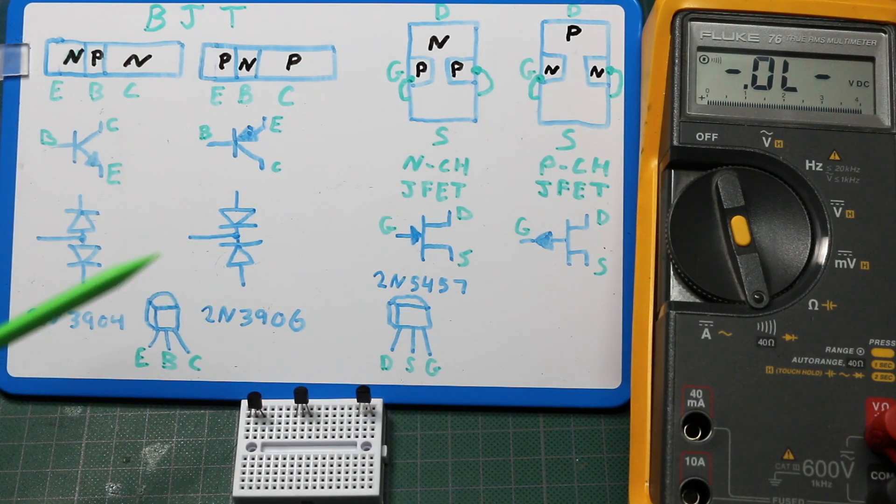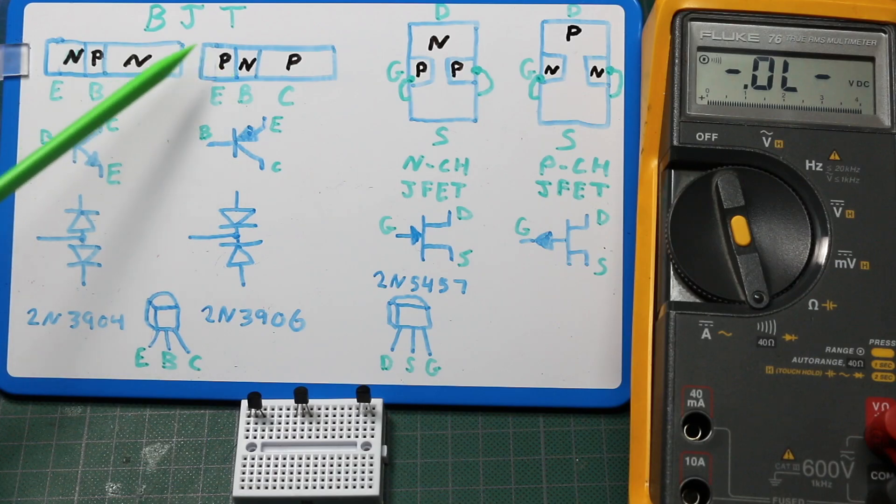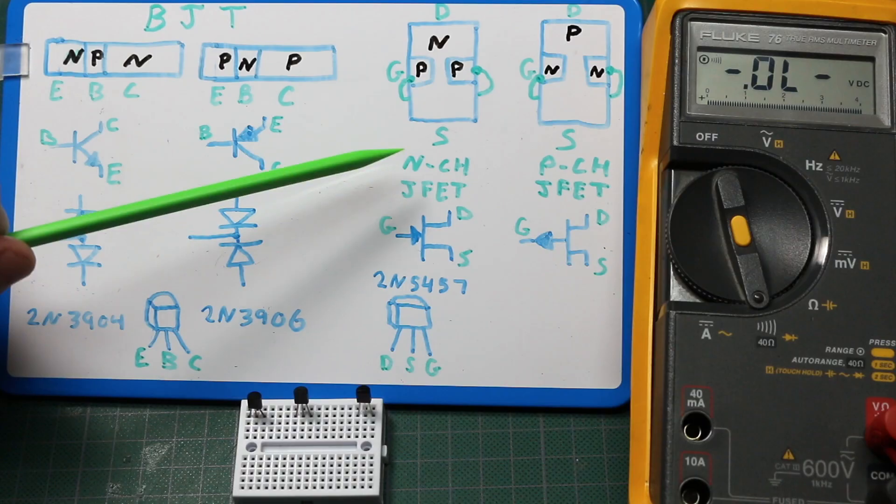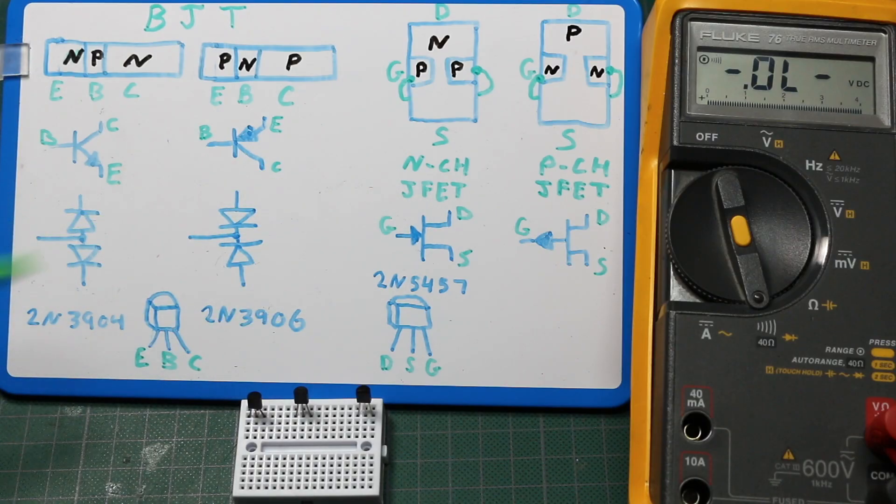Here's how we can use a digital multimeter to do some basic testing on NPN and PNP bipolar junction transistors and JFETs. I only have an N-channel JFET but I have an NPN and a PNP transistor here.